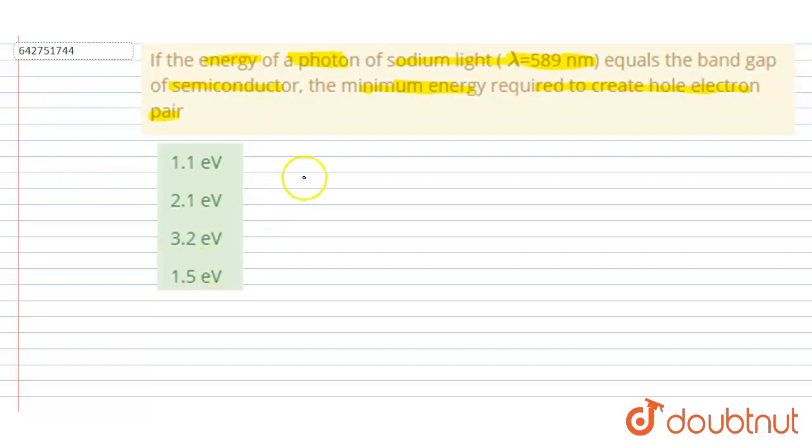So I will write the energy of that light is equals to the gap energy, and it is equals to hc by lambda. Now you can just put the value of h.